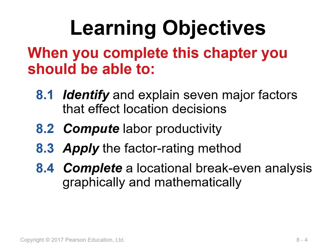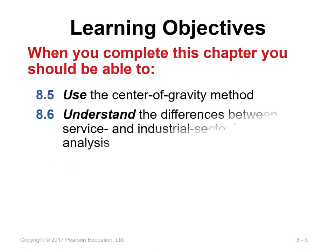The learning objectives for this chapter: at the end, students should be able to identify and explain the seven major factors that affect location decisions; compute labor productivity; apply the factor rating method; complete a locational break-even analysis graphically and mathematically; use the center of gravity method; and understand the difference between service and industrial sector location analysis.